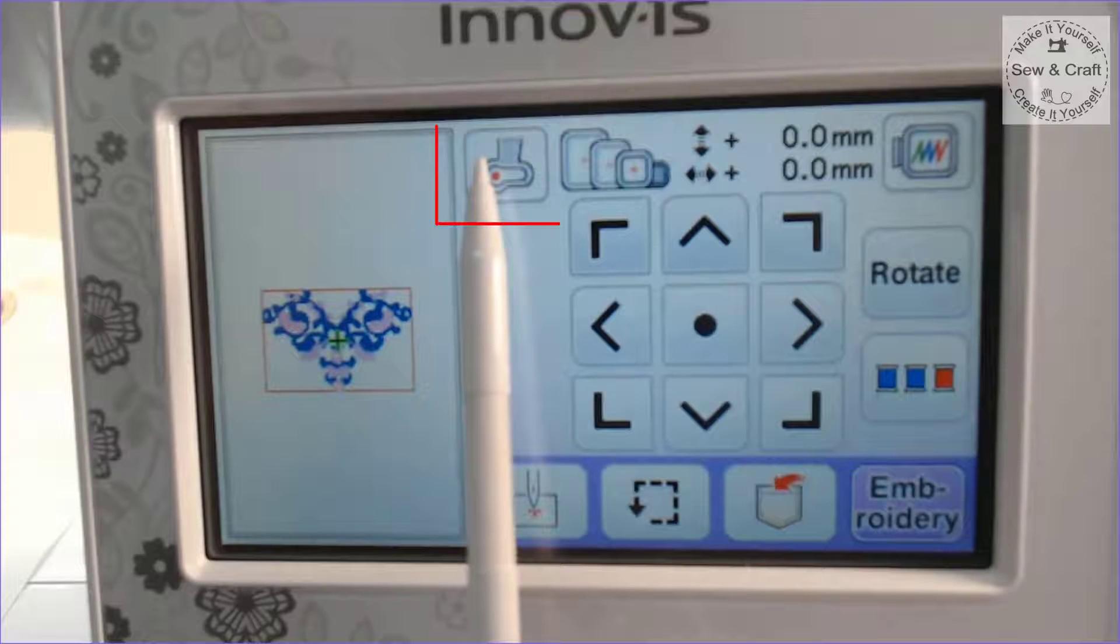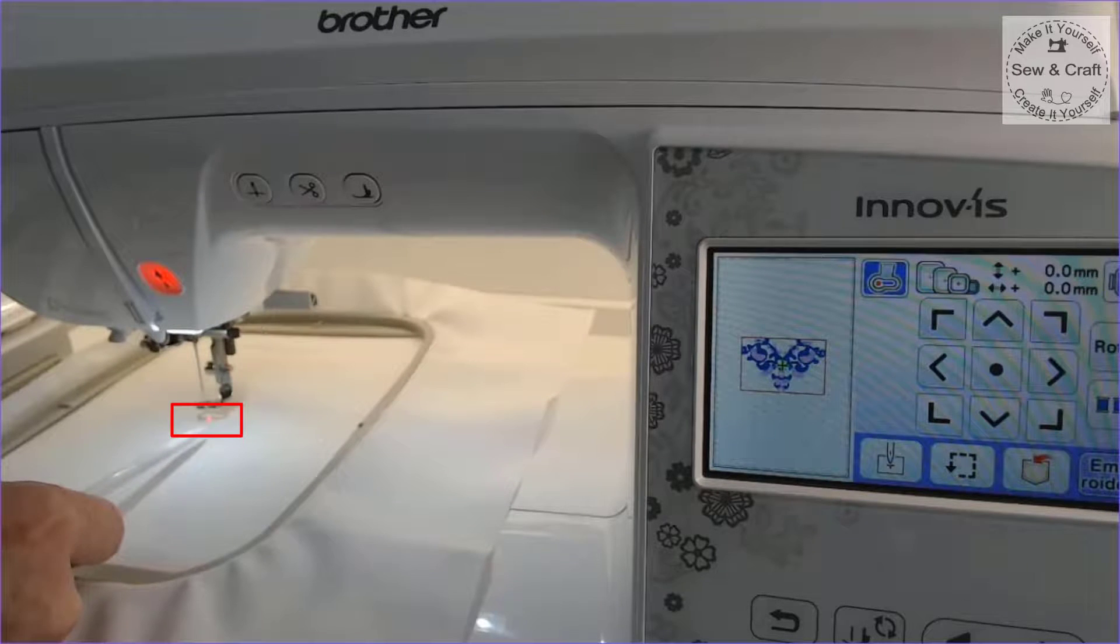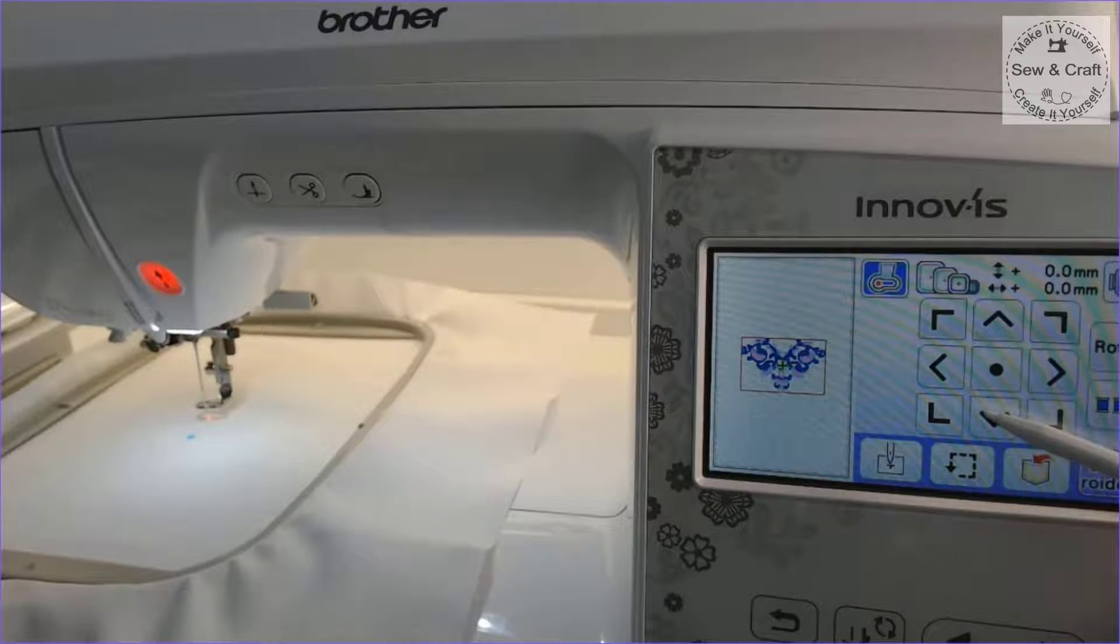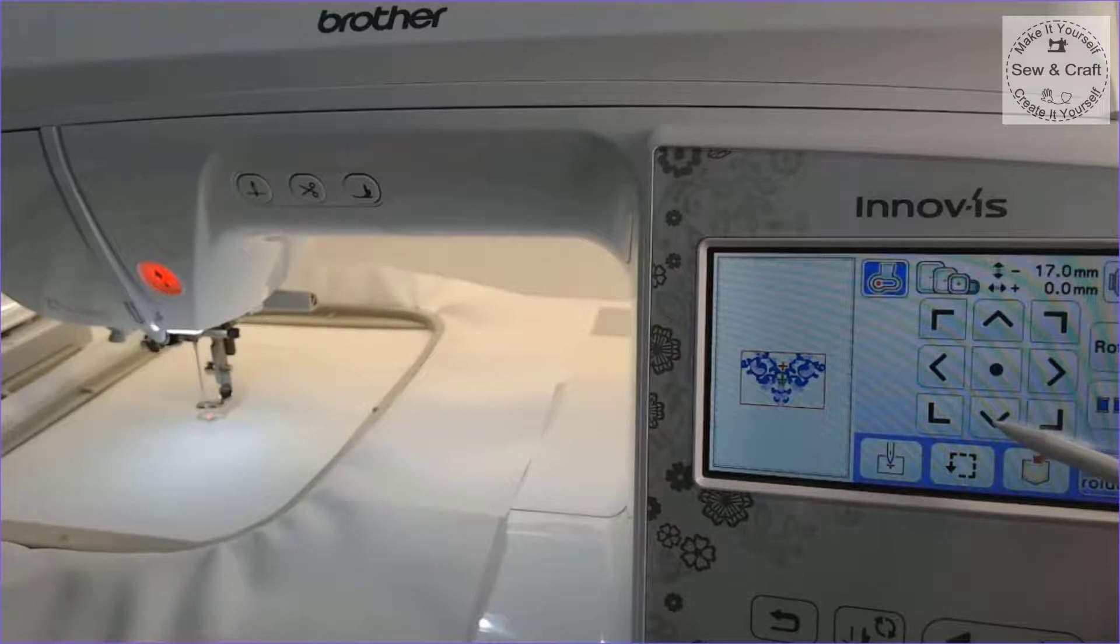The NV880E has an LED pointer foot which makes it really easy to see the starting point of your embroidery design because the machine shines a little red light on the starting point. I've activated the LED pointer foot and you'll see a little red light drops down onto the fabric. That's the starting point of my embroidery design. However, I've made a blue mark on my fabric where I'd like my embroidery to start, so I'm simply going to move the machine until that little red light is on top of my blue dot and then I can start to embroider.